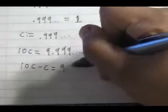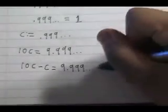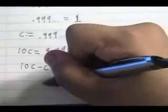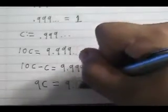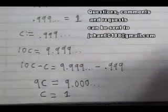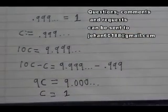10c minus c equals 9.9 repeating minus 0.9 repeating. Therefore, 9c equals 9. Dividing by 9 gets us that c equals 1. So yeah, thank you.